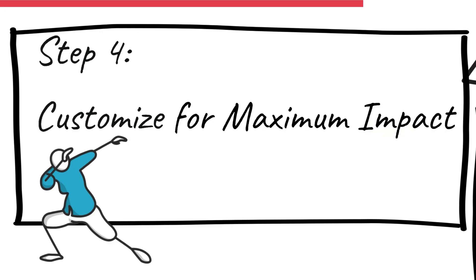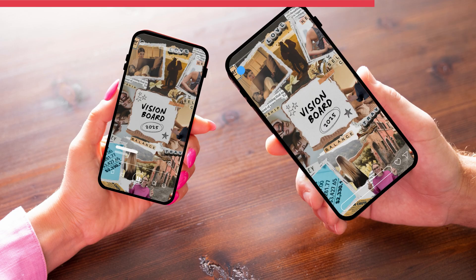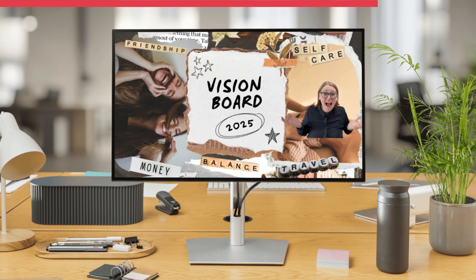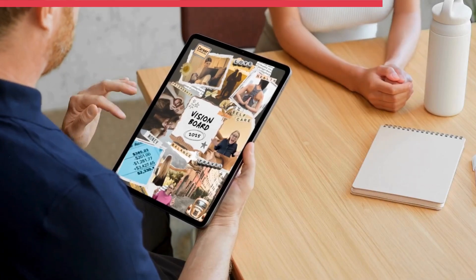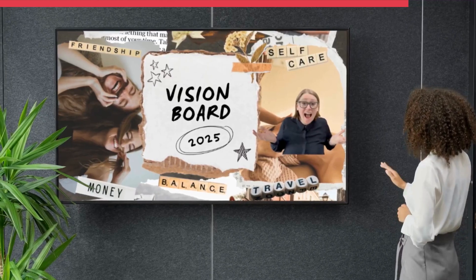Step number five: save and use your vision board daily. Now that your vision board is finished, make it part of your everyday routine. Save it as a mobile wallpaper and use it on your lock screen. If you like physical vision boards, print it out and put it somewhere you can see it daily — your mirror, fridge, or office. Check in monthly and update it as your goals evolve, adding new goals or replacing images as you achieve them. Spend five minutes every morning looking at your vision board and visualizing success — it rewires your mindset for achievement.